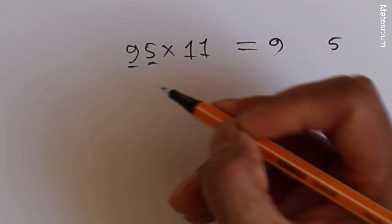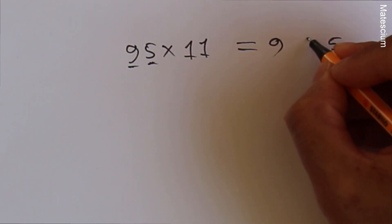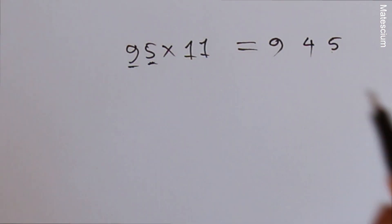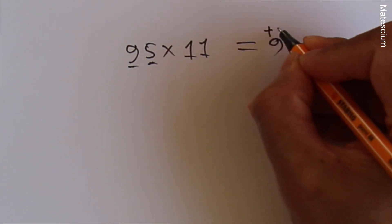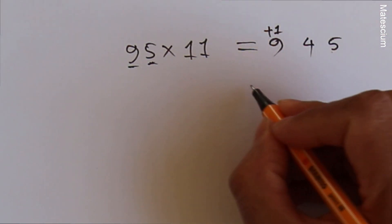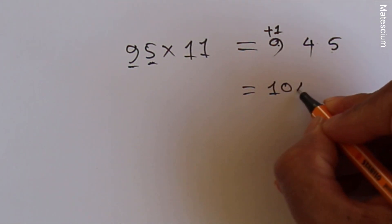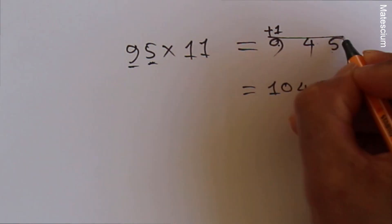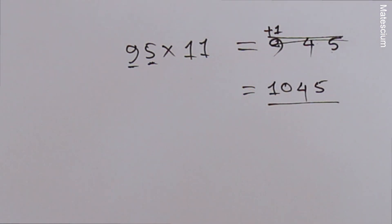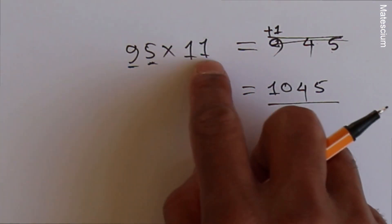9 plus 5 which is 14. Write 4 here and carry 1 that should be added with 9. That is 9 plus 1 is 10. This 4 is here and 5 is here. So 1045 is the answer of 95 times 11.